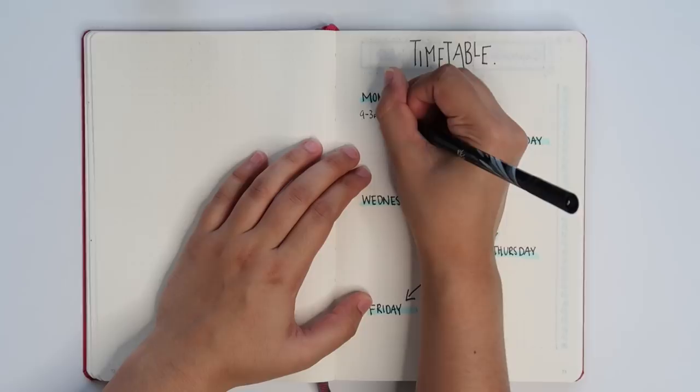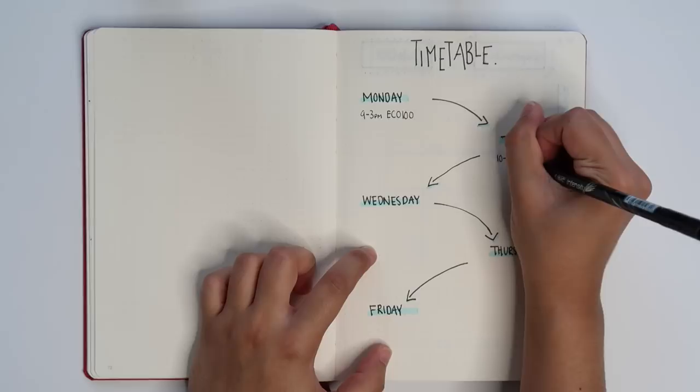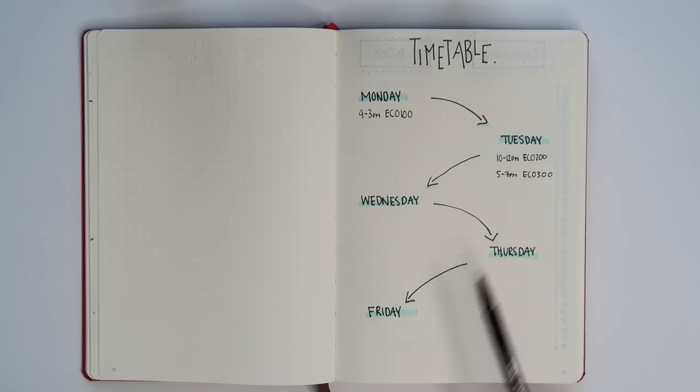And you've got a 10 to 12 p.m. on Tuesday with maybe 5 to 7 later on, and I think from there it's pretty self-explanatory. As you can see through my speed through, I added pops of color all throughout these spreads with my mild liner as always, link is in the description box below.